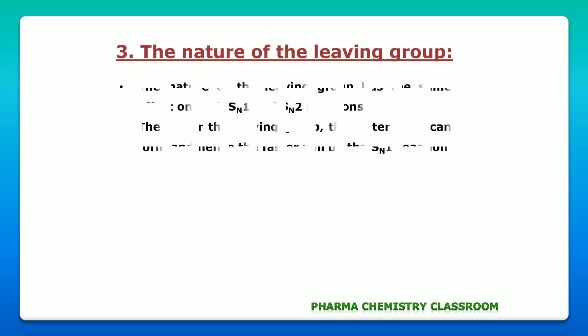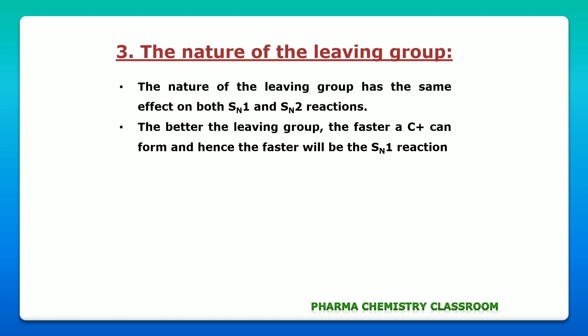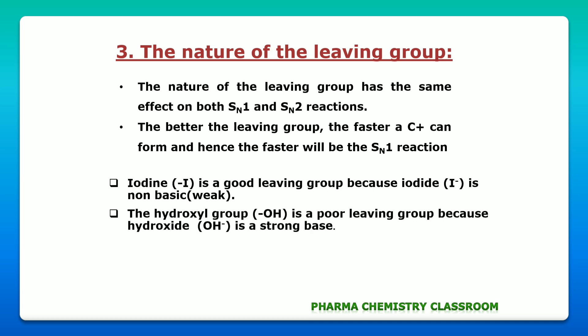Next, the nature of the leaving group has the same effect on SN1 as on SN2 — the better the leaving group, the faster will be the SN1 reaction. As seen in SN2 reaction, I⁻ or weak bases are better leaving groups.